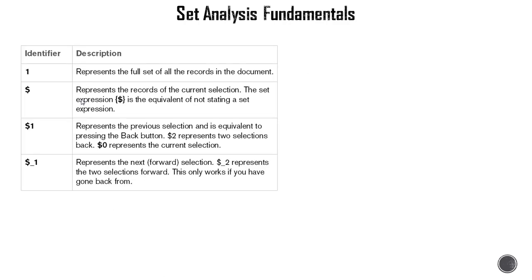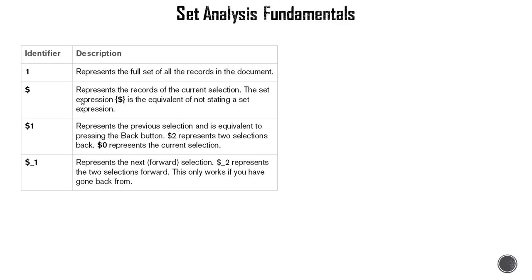Let's look at some more examples. So the first component is the identifier. These are the various identifiers you can use—mainly 1 and dollar are commonly used. Dollar 1 and dollar underscore 1 are there, but I have seldom used them. So 1 represents the full set. When you use 1 as an identifier, that means you want to consider the entire data set. Dollar means the default or current selection, so it will honor selections made by your users.